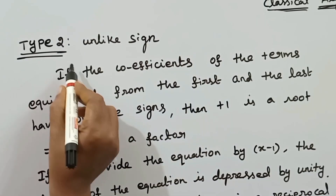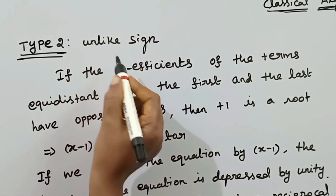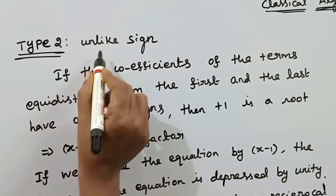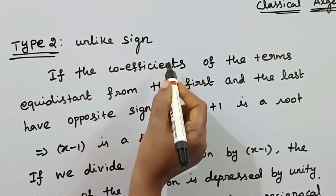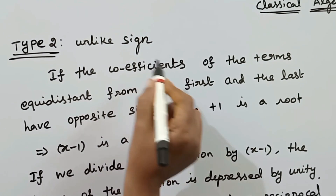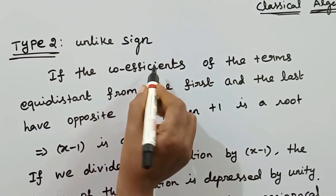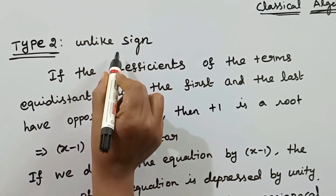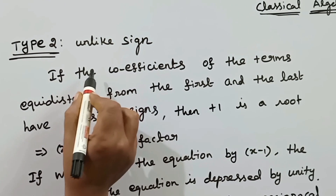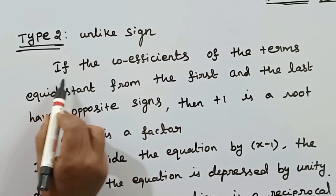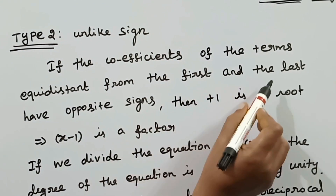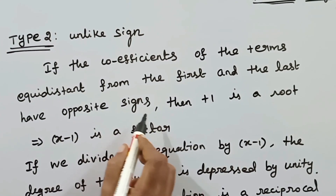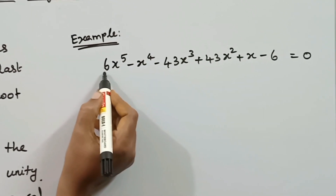Next is Type 2: unlike sign. For an odd degree reciprocal equation with unlike sign, we convert to an even degree like sign reciprocal equation — that is the standard form. If the coefficients of terms equidistant from the first and last have opposite signs, we have an unlike sign reciprocal equation.